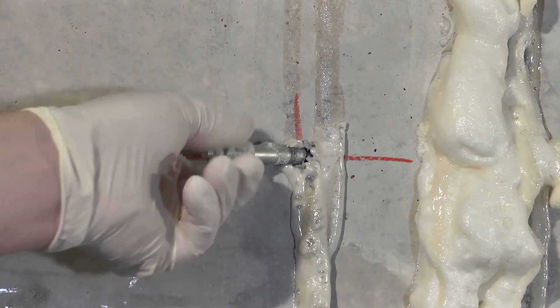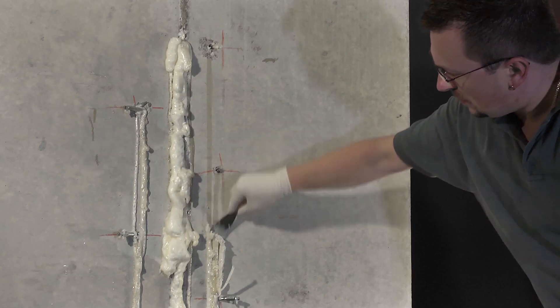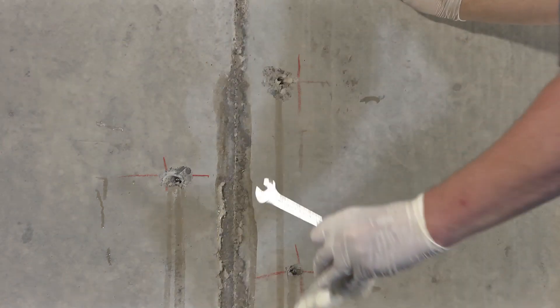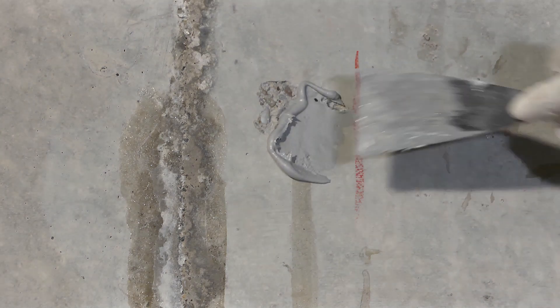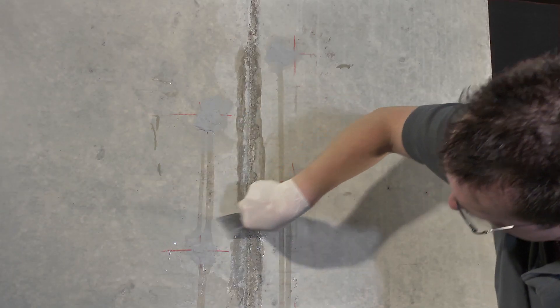Use a trowel to remove any excess resin on the concrete surface. The injection holes left after removal of the upper section of the packers can be filled using the Frank filler compound. If required, the remaining surface of the crack or joint can also be smoothed off using the special filler.